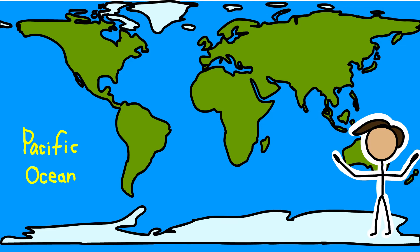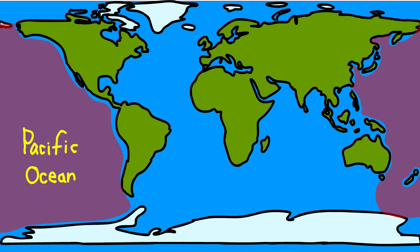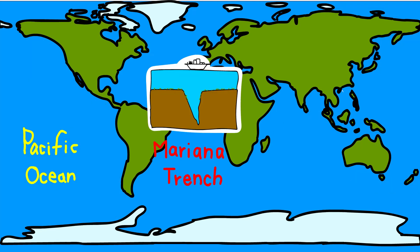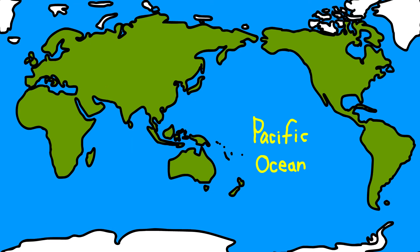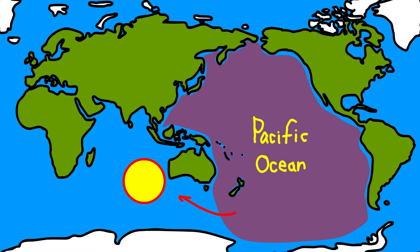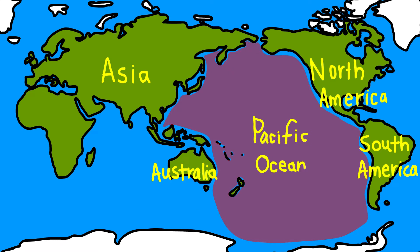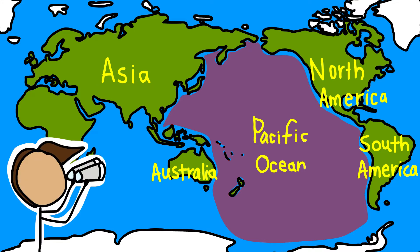The Pacific Ocean is the largest ocean, spread over one-third of the Earth. Mariana Trench, the deepest part of the Earth, lies in the Pacific Ocean. The Pacific Ocean is almost circular in shape, and is surrounded by Asia, Australia, and North and South America.